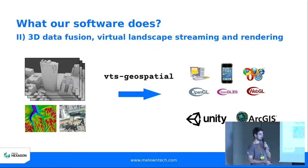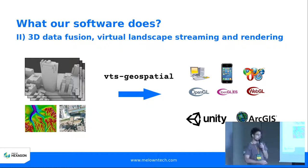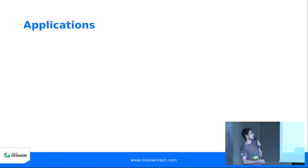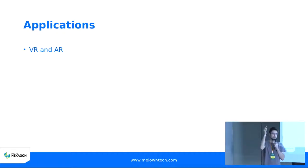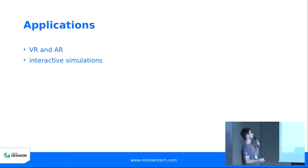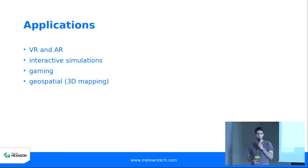So what are the applications of VTS Geospatial? It's VR and AR — imagine you can write an app where you look out of this very window with your mobile phone and you see street names or important buildings. That's one of the apps you can write with VTS. It's also good for interactive simulations, gaming via the Unity plugin, and of course 3D geospatial mapping.